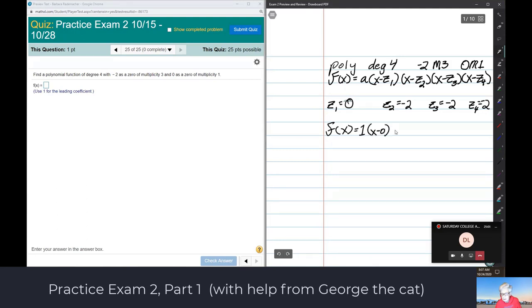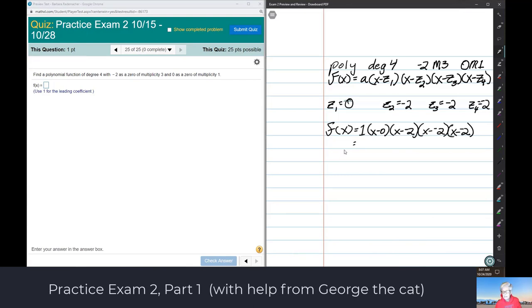So f of x, we're going to let a equal one. It says that right there. Use one for the leading coefficient. Okay, times x minus zero, x minus negative two, x minus negative two, and x minus negative two.